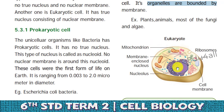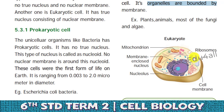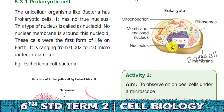Now we can see the nucleus inside a typical eukaryotic cell. It has a double membrane structure around the nucleus. When the nucleus is present, the cell is said to be a eukaryotic cell. It also has other cell organelles such as mitochondria and chloroplasts in plant cells.